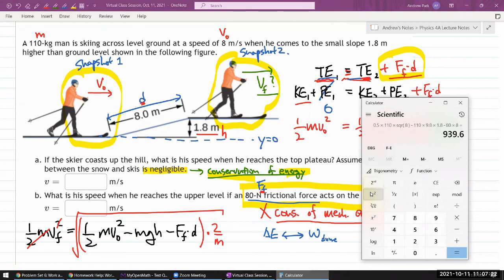So let me say equals and then multiply by 2 divided by the mass 110. That's the quantity under the square root. So now let me do the square root, 4.13 meters per second.